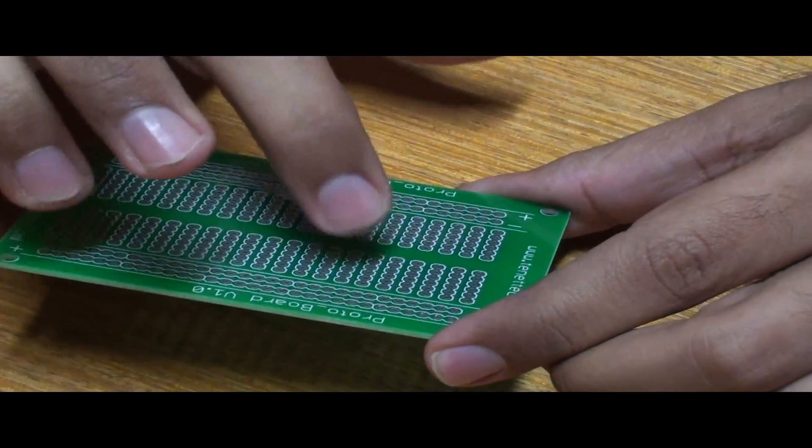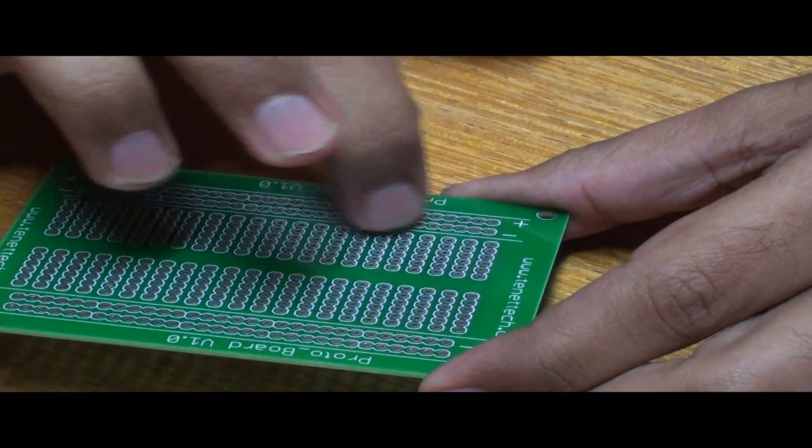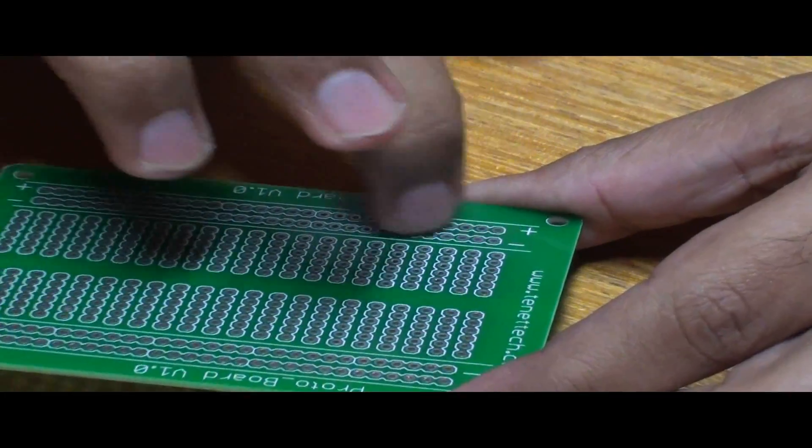So here we can see this is all vertical lines and these ground and the powers are all in horizontal lines.